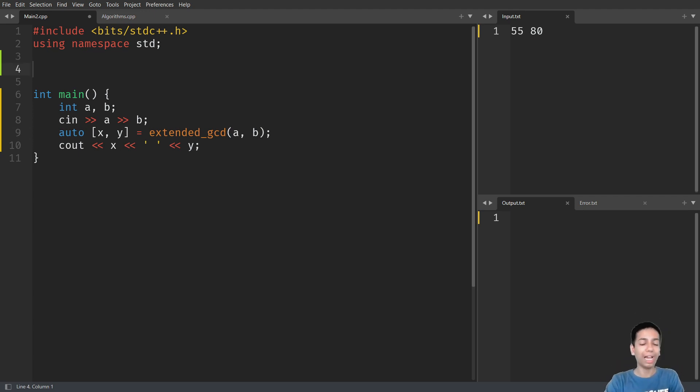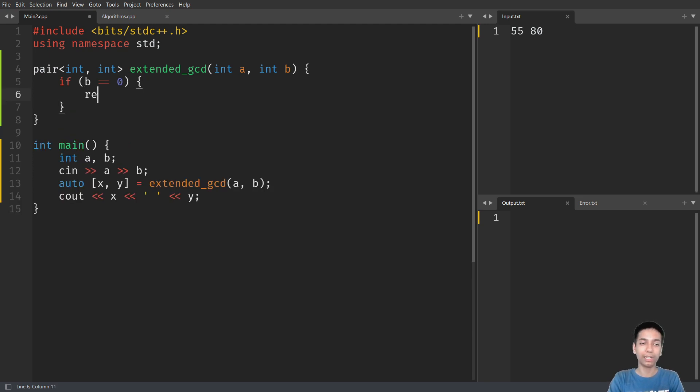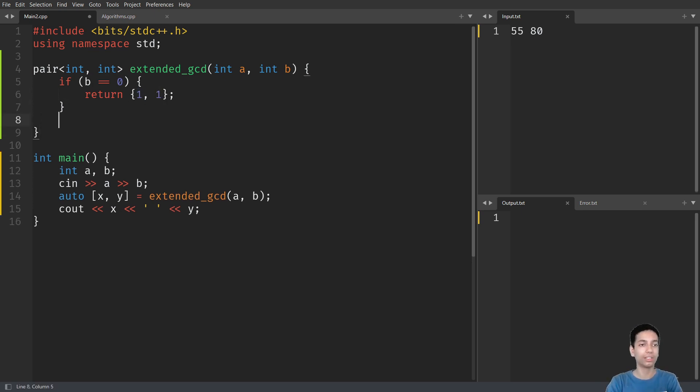It returns a pair of X and Y such that AX plus BY equals GCD of A and B. You have pair of int extended GCD that takes A and B. Here it checks that if B equals 0, then we return 1 and 1. This is the base case. A times 1 plus B is 0, so 0 times anything is always equal to GCD of A and 0, which is A.